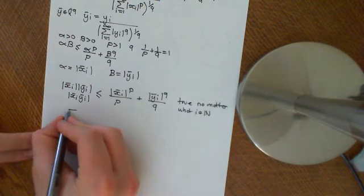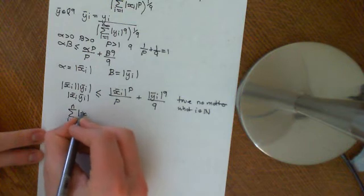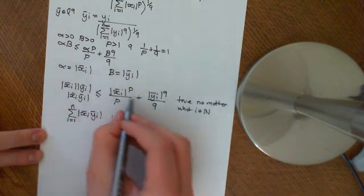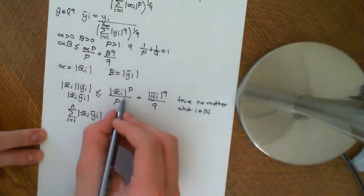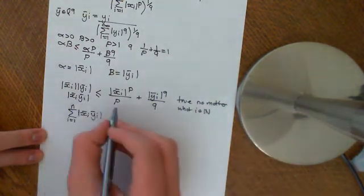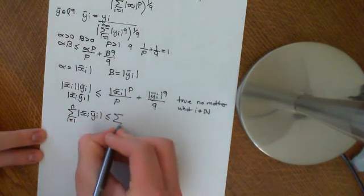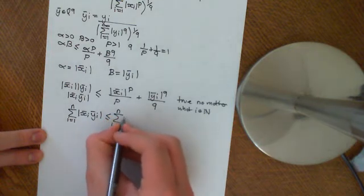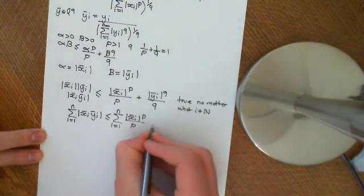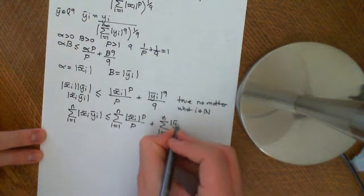Since the inequality holds for each i, we can sum from i equals 1 to some finite value n: the sum of |x̄ᵢ · ȳᵢ| is less than or equal to the sum of |x̄ᵢ|^P over P plus the sum of |ȳᵢ|^Q over Q, because if each corresponding term satisfies the inequality, then the sum of the left-hand side terms is less than or equal to the sum of the right-hand side terms.